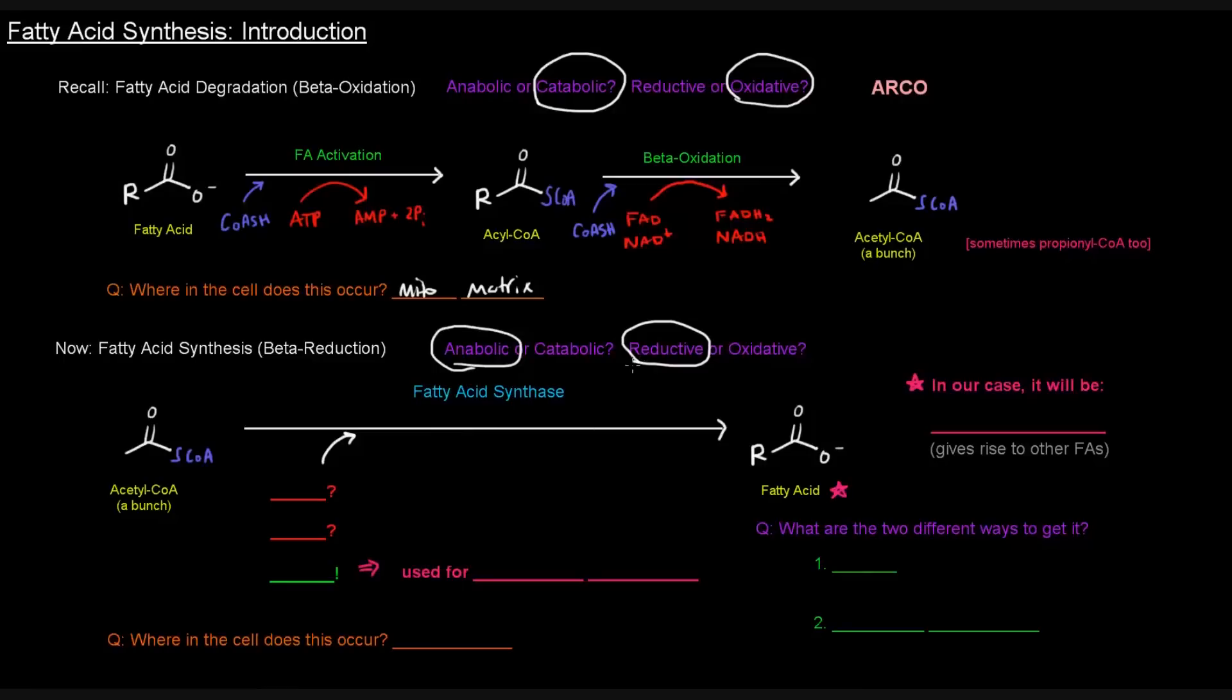That means it's going to require reducing agents. Beta-oxidation required oxidizing agents, these FADs and NAD+, that were turned into FADH2s and NADHs, respectively. So what are going to be the reducing agents in fatty acid synthesis? Are they going to be FADH2 and NADH? Nope, not those guys. Those are not used. Instead, what's used is NADPH.